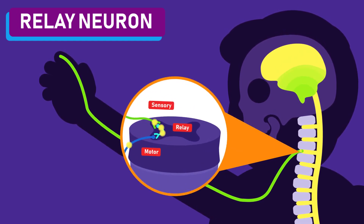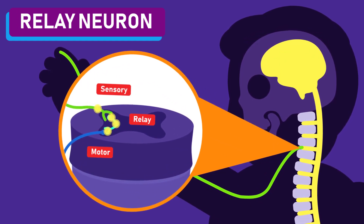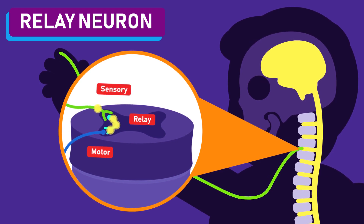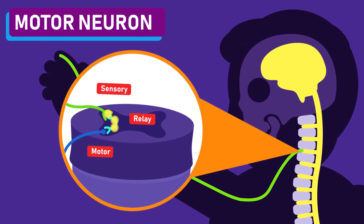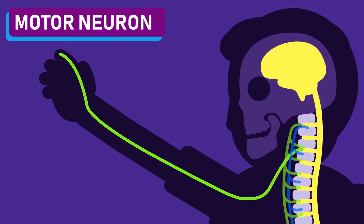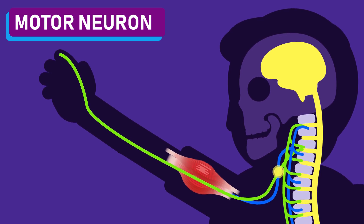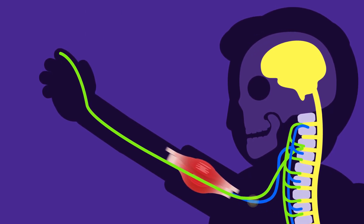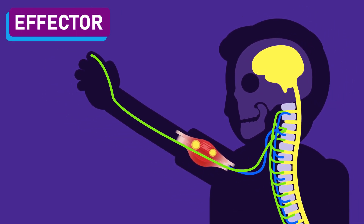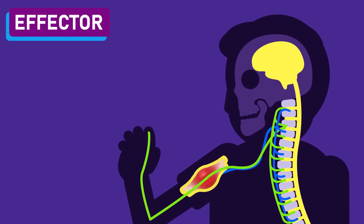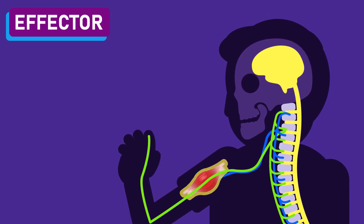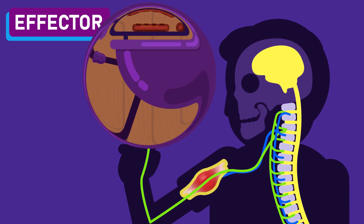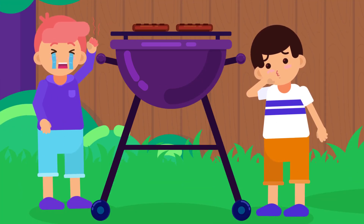3. Intermediate Neuron — also called Relay Neuron — carries the impulse within the central nervous system. 4. Motor Neuron — carries the impulse away from the central nervous system towards the effector. 5. Effector — parts of the body that respond to the stimulus by carrying out the required action. This can be a muscle or a gland.